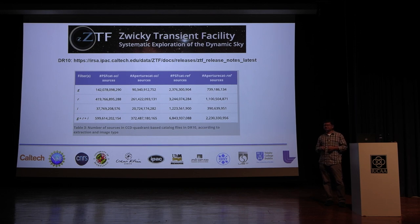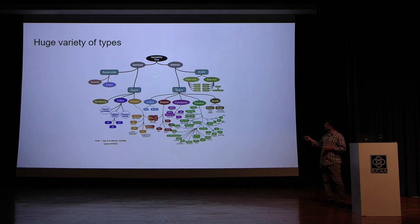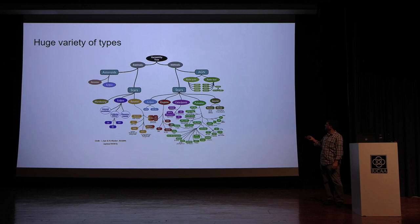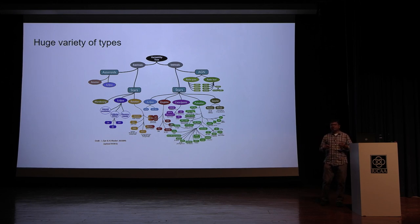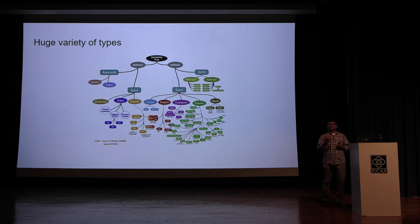Over five years ZTF has collected a very large number of sources. We are trying to classify everything into a tree of object types. This tree includes extrinsic variability — asteroids that move or rotate, eclipsing binaries, microlensing — and intrinsic variability, where something like a mini-explosion or full-blown explosion is happening. Within those categories you have AGN (radio-loud or radio-quiet), eruptive, cataclysmic, pulsating, and secular variables, each with many sub-branches. We need better observations across multiple filters and times to understand all of them.